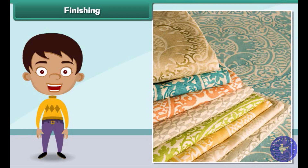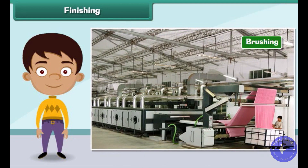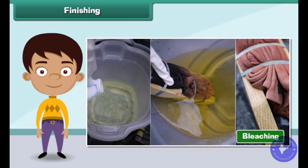The process that improves the appearance and usefulness of a fabric is known as finishing. Some important finishing treatments are: brushing, which removes short and loose fibers from a fabric; calendering, which improves the smoothness and shine of a fabric; and bleaching, which removes the natural color of raw fabric.